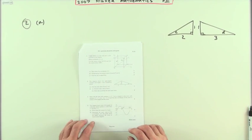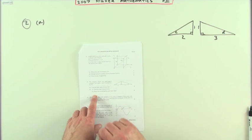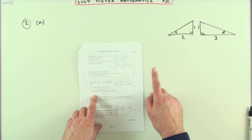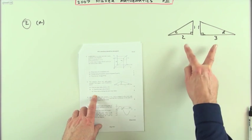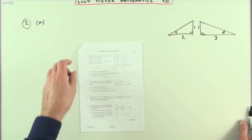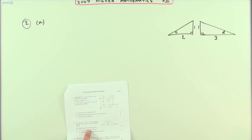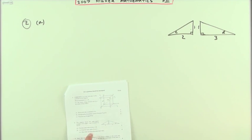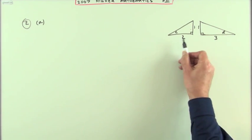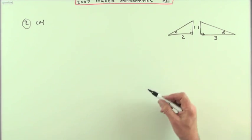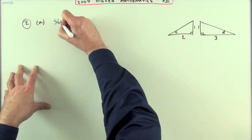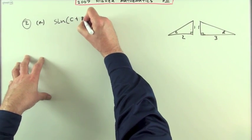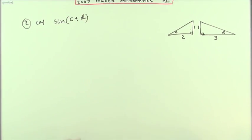Number 2 from the 2007 Higher Maths Paper 2, the exact values of angles questions, the addition formulae and double angle formulas, and little triangles here. First part, find the exact value of sine c plus d. Well, I've separated the triangles just so I can see them quite clearly, and it asked for the exact value of the sine of c plus d.